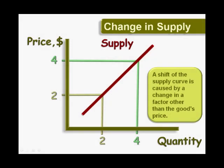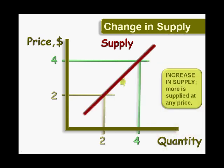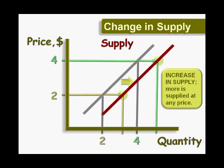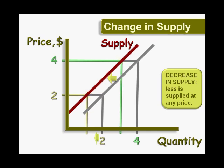A shift of the supply curve is caused by a change in a supply factor other than the good's price. An increase in supply means that sellers can supply more at any price than before. The cost of inputs may have fallen, or a change in technology has made suppliers more productive. Conversely, a decrease in supply means it has become more difficult to make this item, so they will offer less at any given price.